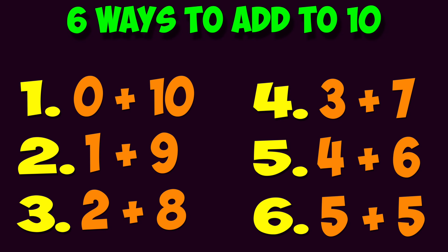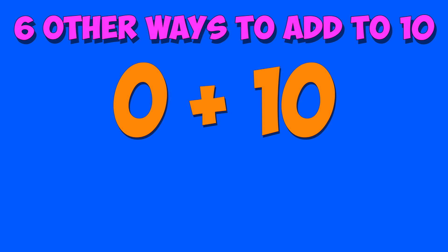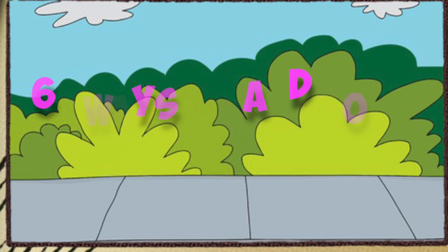But some of you might have noticed that there are six other ways to add to 10. Do you see what they are? Yes — flip those around, so instead of saying 0 plus 10, say 10 plus 0. They use the same numbers and still add to 10, but they're in a different order. Here's the same song with those.